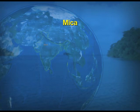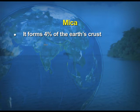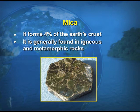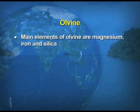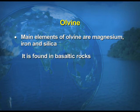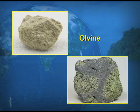Mica is a very common mineral forming 4% of the Earth's crust. It is generally found in igneous and metamorphic rock. Olivine consists of magnesium, iron, and silica, and is basically found in basaltic rock, which is a form of igneous rock.